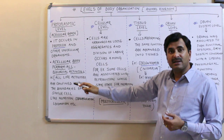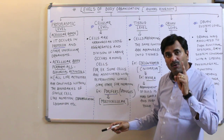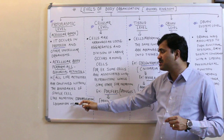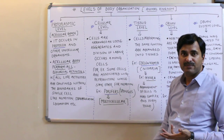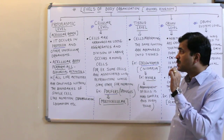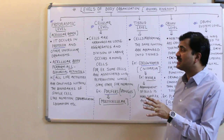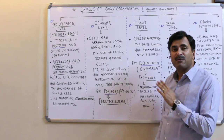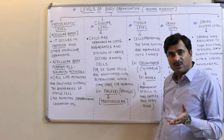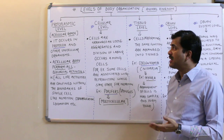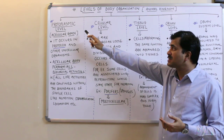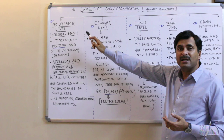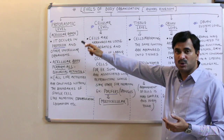In this level, the single cell performs all activities such as nutrition, osmoregulation, locomotion, etc. In summary, the acellular body performs all biological activities, and this type of body organization is called the protoplasmic level, found in protozoans.